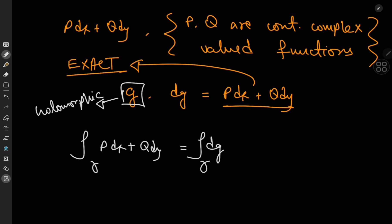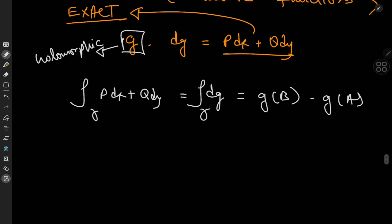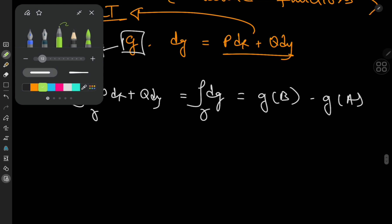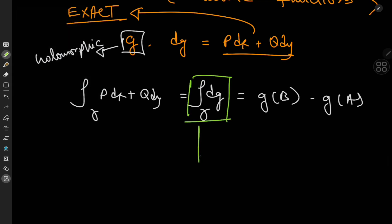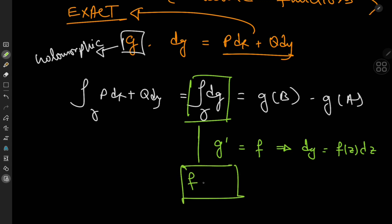We know the right-hand side sorts out to g evaluated at the endpoint b minus g at the initial point a. If we call g' = f, then dg = f(z) dz, where f is a continuous function by virtue of g being holomorphic. So what we have is the integral over the contour gamma of f(z) dz.